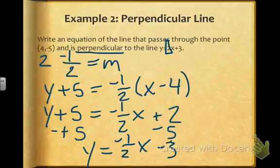That slope, negative 1 half, is the negative reciprocal of 2. So using my slope and using my point, I can find the equation of the line.